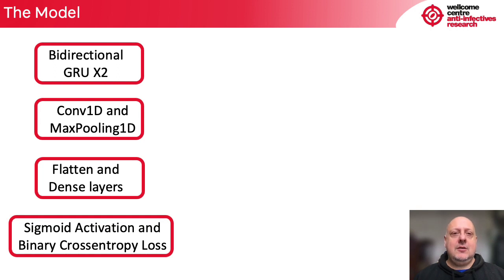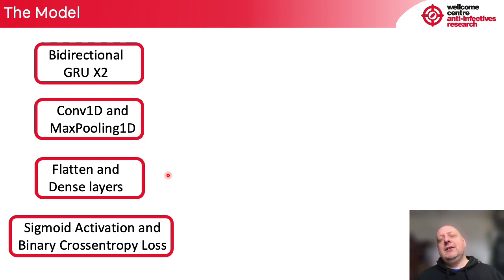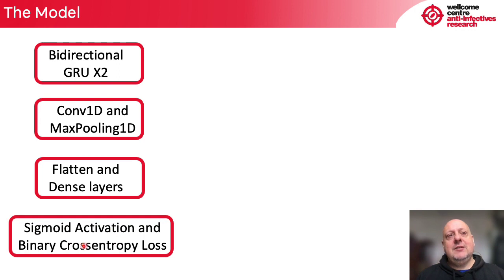Here on the left you can see the backbone of my neural network architecture. What is interesting is that I decided to encode the strength of the promoter with a number from 0 to 1, and then use the sigmoid activation and the binary cross-entropy loss to predict the strength of the promoters.